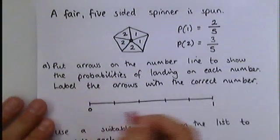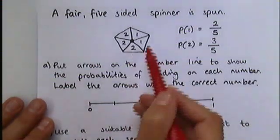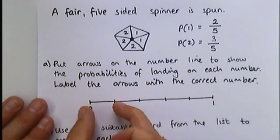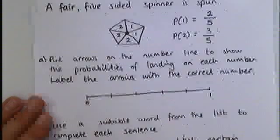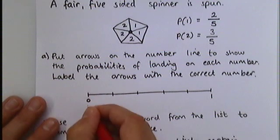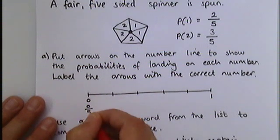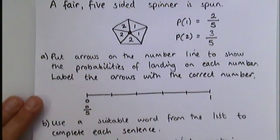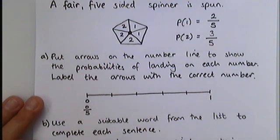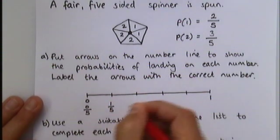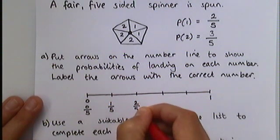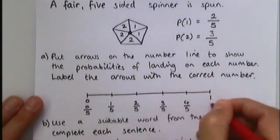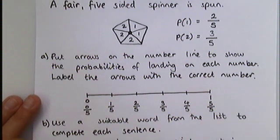Now I need to turn to my number line, and again, the same principle applies. There are five sections on the spinner, so we need five sections. These are the sections of the number line. So the first thing we're going to put here is zero out of five. That means impossible. It's impossible to get a three on this spinner, for example. Next up, one fifth, two fifths, three fifths, four fifths, and something that was certain to happen, five fifths.